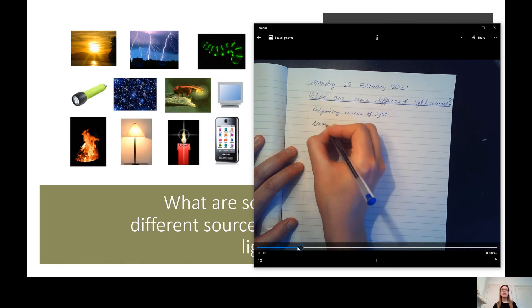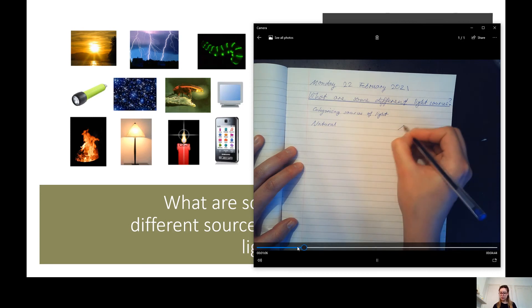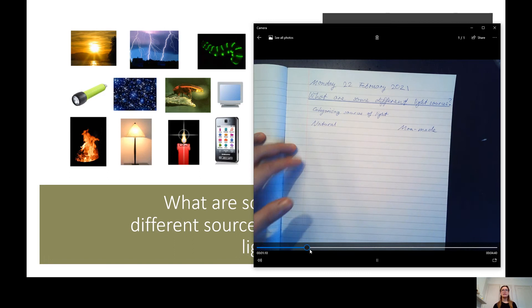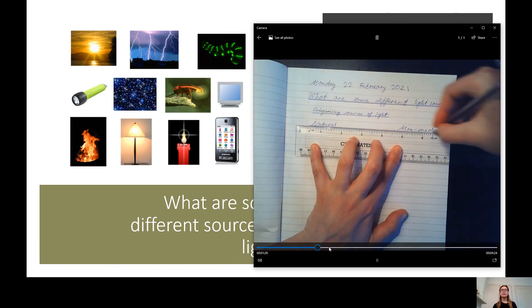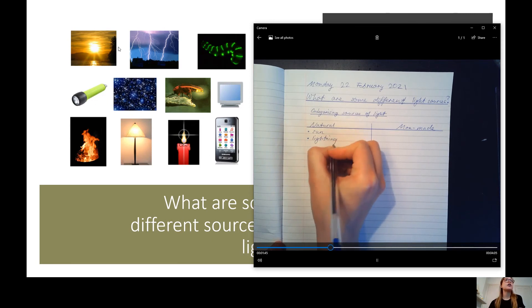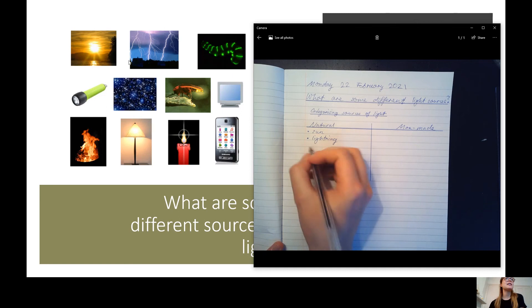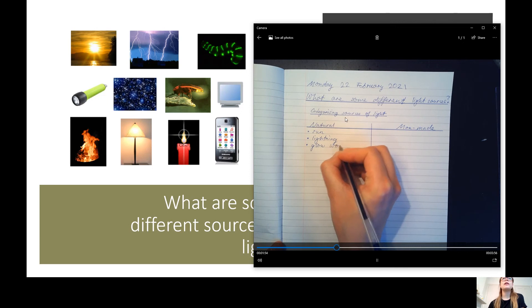Then I use a ruler to underline it, and I methodically went through these pictures. You don't have to use these pictures, but you can use the list that you made, or you can use these pictures. It doesn't matter, as long as you categorise them, depending on whether they're natural or man-made. The sun is natural, lightning is natural, the glow worm occurs in nature, it's natural.